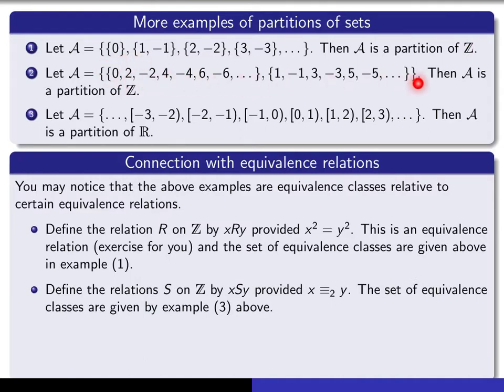What about the second example? We've seen that one before — it's the equivalence relation x related to y if x is congruent to y modulo 2. There are two distinct equivalence classes: the set of even integers and the set of odd integers. That particular partition came from the set of equivalence classes of this relation.